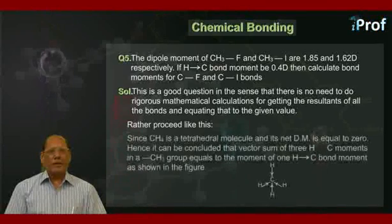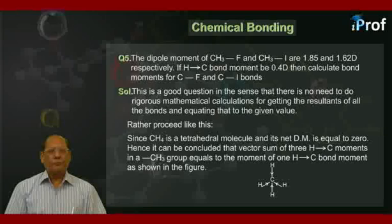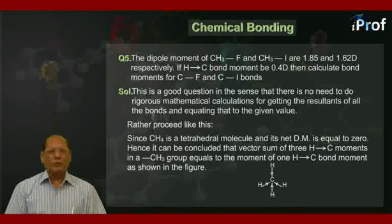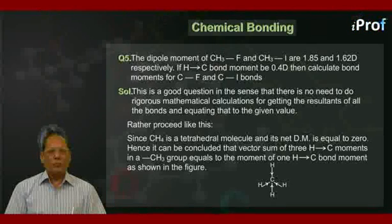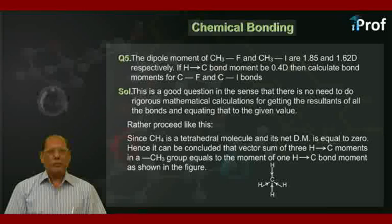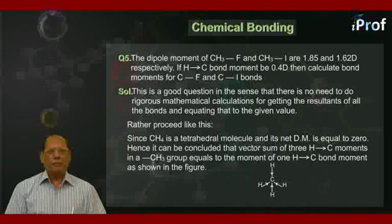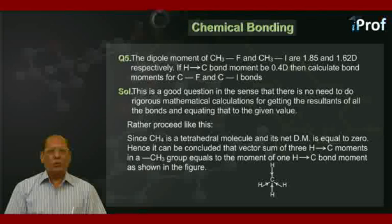Rather proceed like this, since methane, CH4, is a tetrahedral molecule, and we know its net dipole moment is equal to zero. Hence, it can be concluded that vector sum of three HC moments in a CH3 group equals to the moment of one HC bond moment, as shown in the figure.